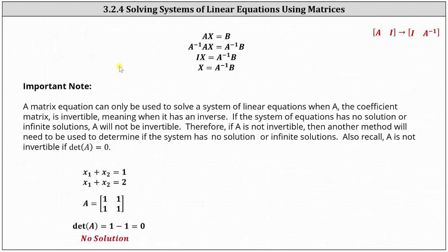Let's look at two quick examples. Say we have the system x1 plus x2 equals 1 and x1 plus x2 equals 2. We should recognize this system has no solution because the sum cannot equal both 1 and 2. Notice the coefficient matrix is a 2 by 2 matrix where all entries are 1, and the determinant equals 0. So A is not invertible, meaning A inverse does not exist, and we could not determine the system has no solution using a matrix equation.